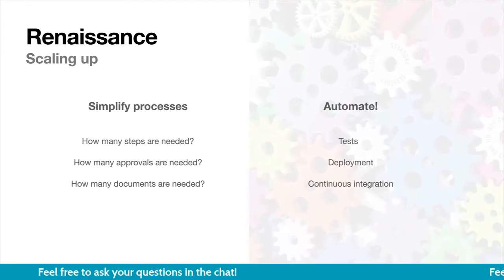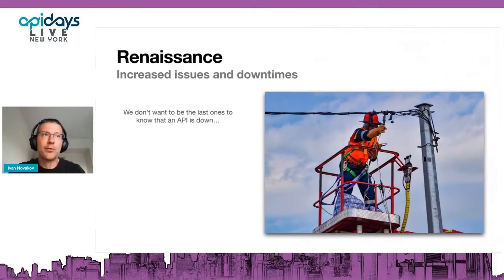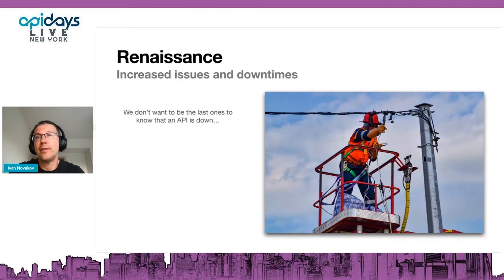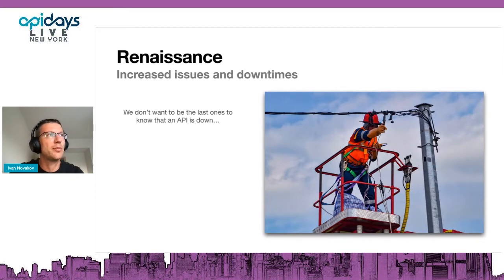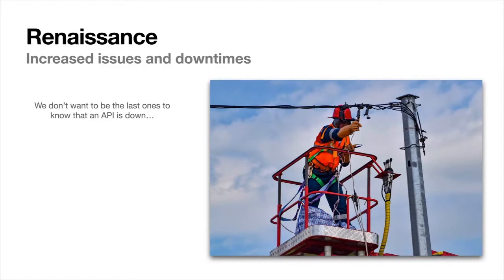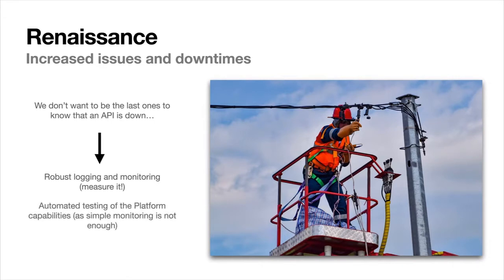With increased API traffic, we also got increased issues and downtimes. There is one important thing: when you run APIs, you want to be the first one to get notified that something is not working. We had a vice president using one popular app which was using many APIs, and he was always calling my boss's boss whenever something was wrong — he was always the first one to find out. These are not the calls you want to receive. So it's very critical to get this information first. It's not only about robust logging and monitoring — in some cases you need to make sure that specific use cases and workflows are tested constantly, because if a box is up and the network is working, it may not show that something's wrong with the platform.